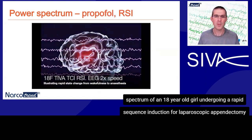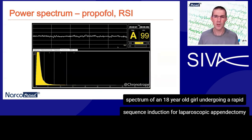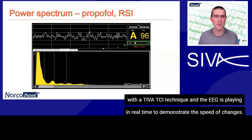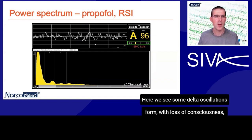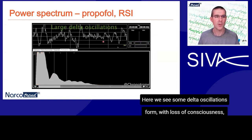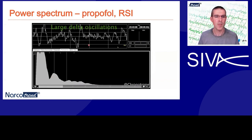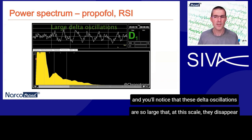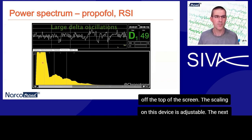I'd like to show you an example to illustrate the changes that we see during induction. This is an EEG and power spectrum of an 18-year-old girl undergoing a rapid sequence induction for laparoscopic appendicectomy with a TEVA TCI technique, and the EEG is playing in real time to demonstrate the speed of changes. Here we see some delta oscillations form with loss of consciousness, and you'll notice that these delta oscillations are so large that at this scale they disappear off the top of the screen.